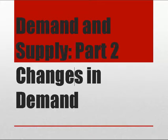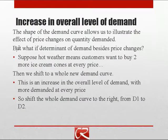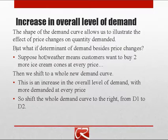Now let's start our second video on the demand and supply model. Here we're going to look at changes in the overall level of demand. Remember the shape of the demand curve allows us to look at how a price change influences the quantity demanded, but lots of things besides the price of a good influence the amount that customers want to buy. So what if some other determinant of demand besides the price changes? For a specific example, let's suppose that hot weather means customers want to buy two more ice cream cones at every price.